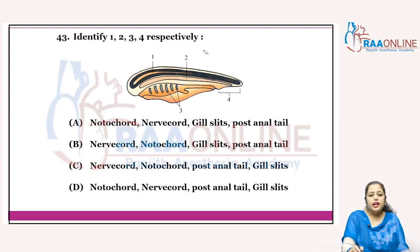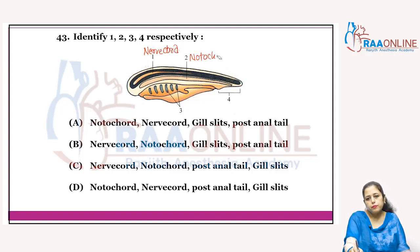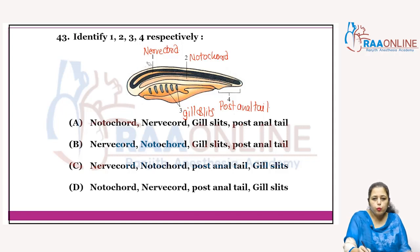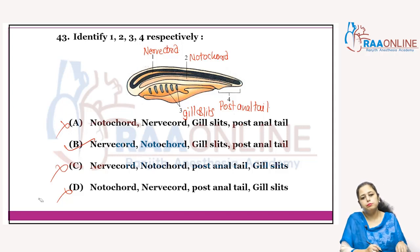Identify 1, 2, 3, 4 respectively. This is the diagram of chordate characteristic features from NCERT page 55. Number 1 shows the nerve chord. Number 2 represents the notochord. Number 4 represents the post-anal tail. Number 3 represents the gill slits. So 1 is nerve chord, 2 is notochord — both cancel options. 3 is gill slits, 4 is post-anal tail — answer is B.